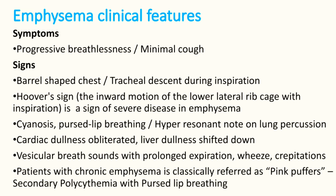On examination of emphysema patients, you see barrel-shaped chest, where the AP diameter equals the transverse diameter. Tracheal descent occurs during deep inspiration. Hoover's sign — inward motion of the lower lateral rib cage with inspiration — is a sign of severe emphysematous disease. Cyanosis, pursed lip breathing, and hyperresonant note on percussion are also seen.